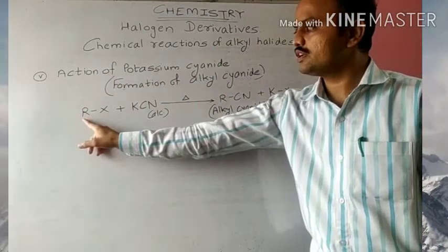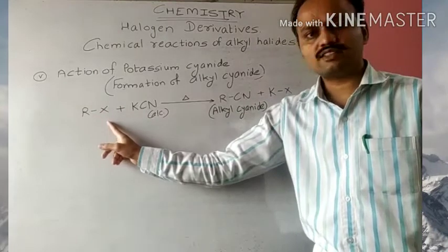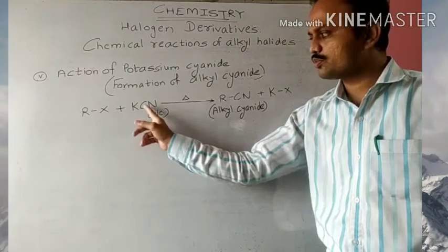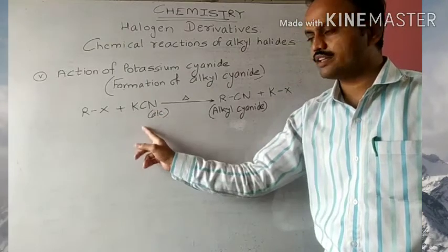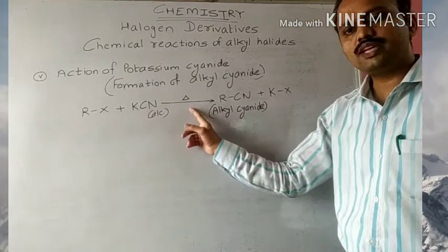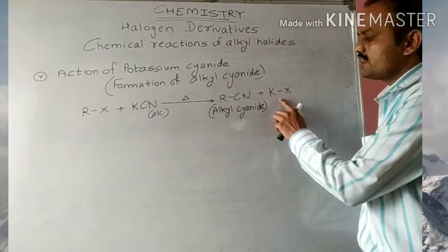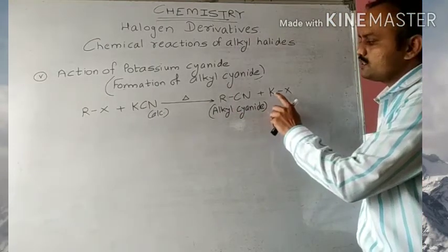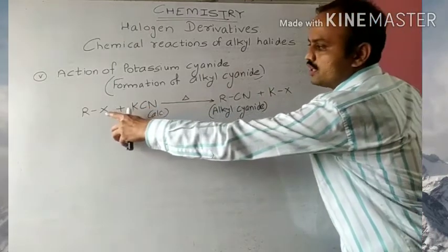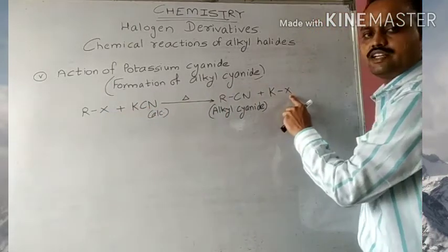The general reaction for this is: RX, that is alkyl halide, plus KCN in alcoholic condition — that is potassium cyanide in alcoholic condition — in presence of heat, we get alkyl cyanide plus KX, that is potassium halide. Whatever halogen atom we use in this example, that will get attached to potassium.